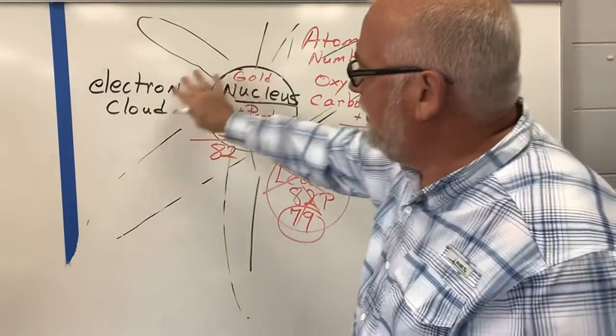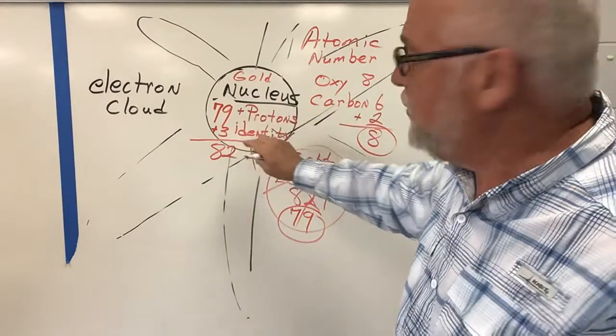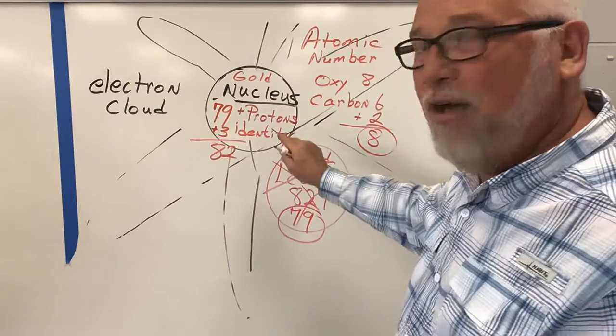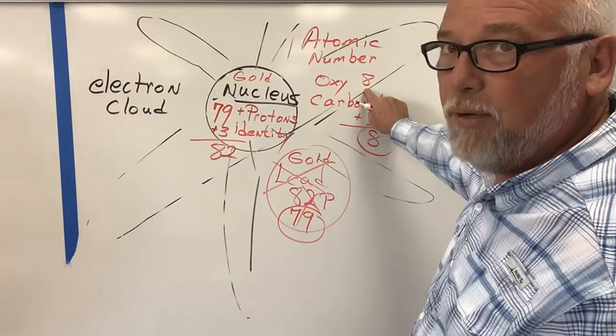In chemistry class, we'll talk more about the electron clouds. Tomorrow, I'll talk about molecules. Today, I just wanted you to understand what the elements are and how they got those numbers, those atomic numbers, in the upper-hand corner.